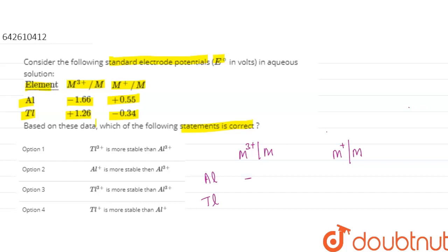And the values are minus 1.66 for aluminum, plus 1.26 for thallium, and here plus 0.55 and minus 0.34.